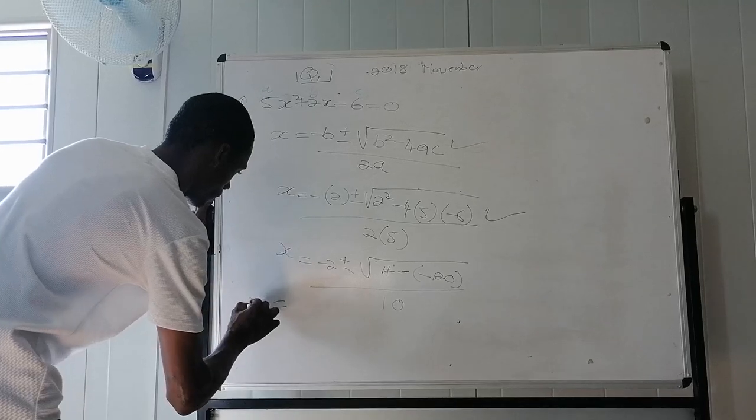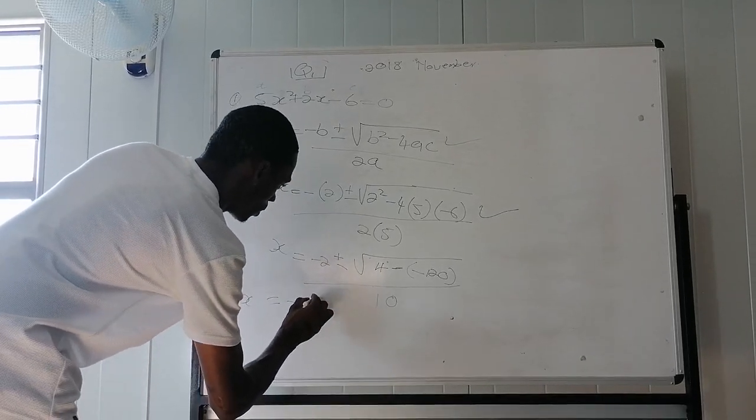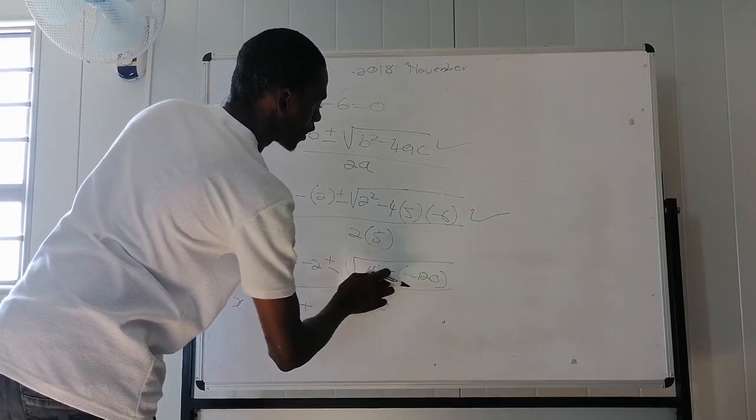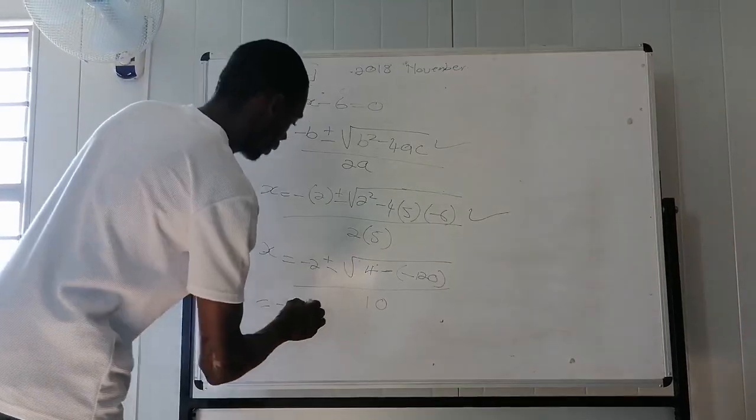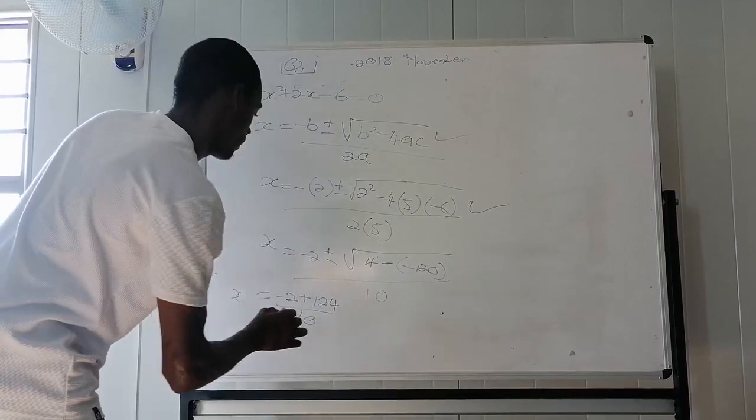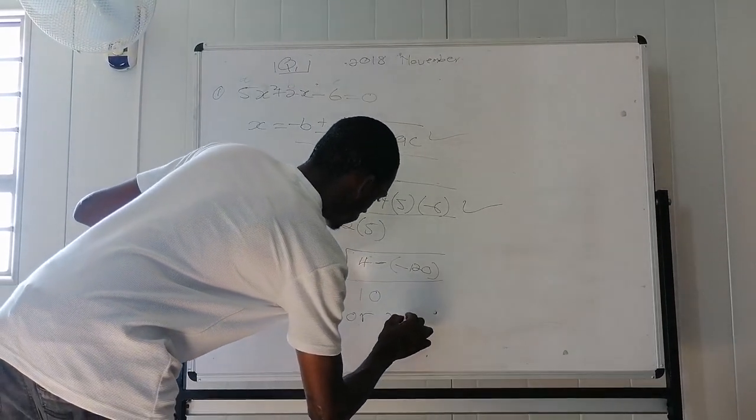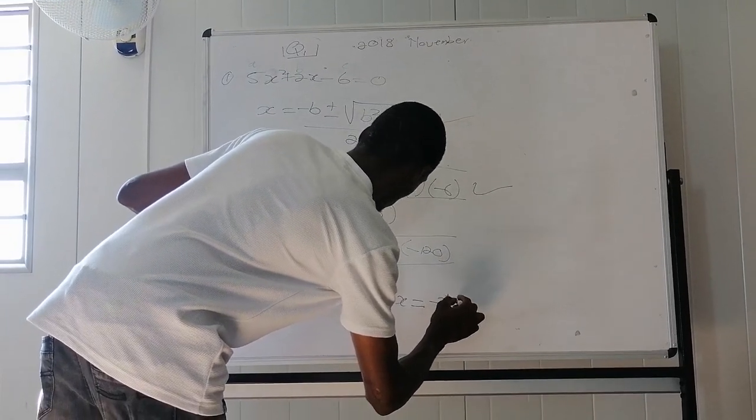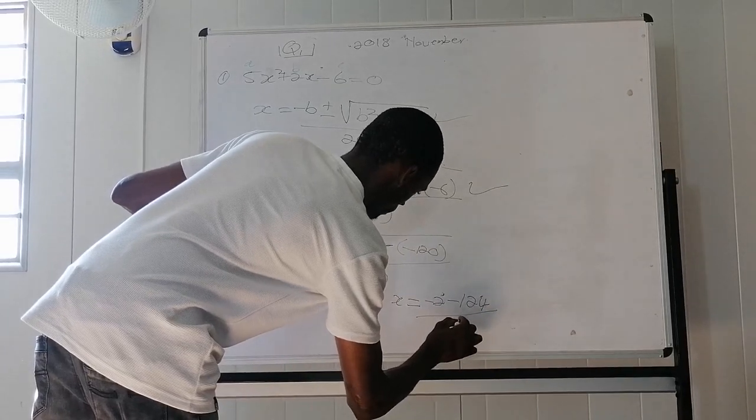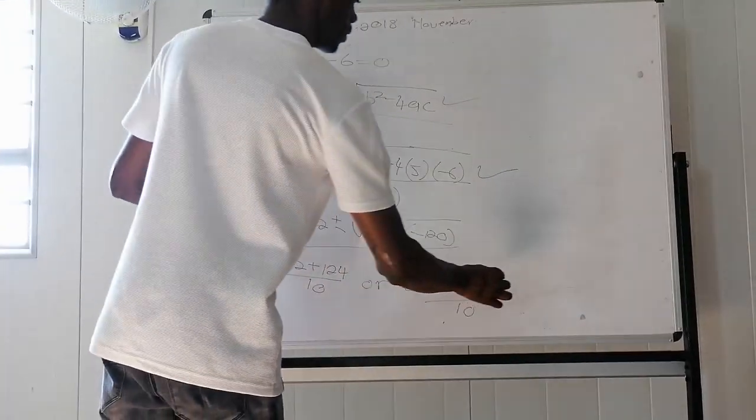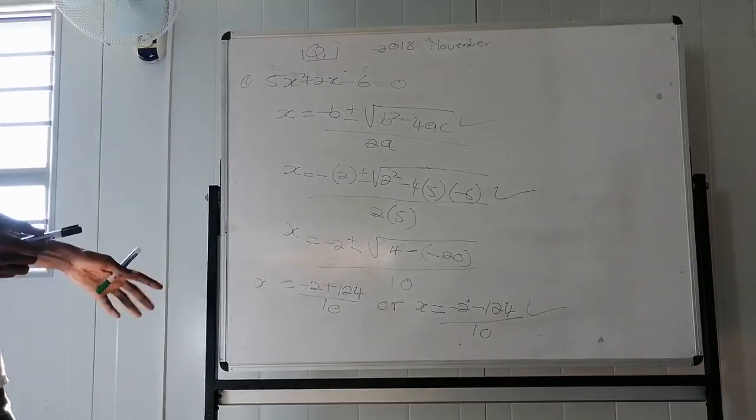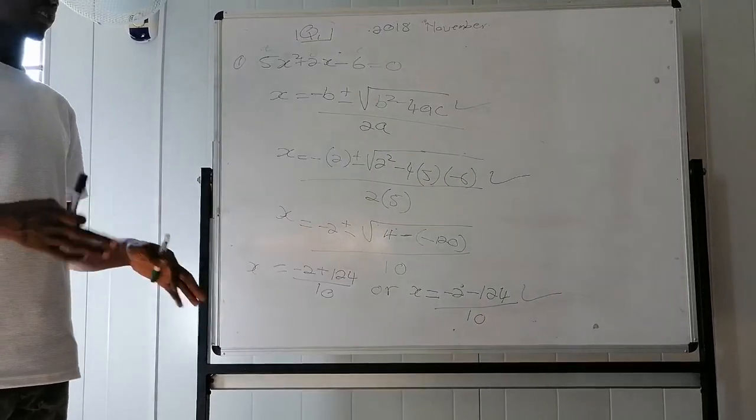Then your x will be negative 2 plus, now this will cancel each other, will be positive. Then it's 124 over 10, or x will be equal to negative 2 minus 124 over 10. Then that is your third mark guys. So if you have a calculator, just punch everything, then you will get an answer. It's going to be simple.